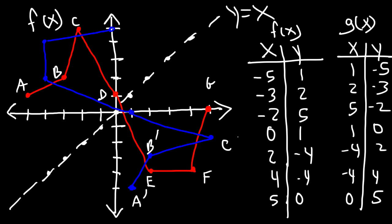So this is C prime, D prime, E prime, F prime, and G prime. You can see the symmetry — comparing the red line and the blue line, they're symmetric about the line y equals x. That's the graphical relationship between a function and its inverse function. And that's it for this video — now you know how to graph an inverse function using a rough sketch or using points.